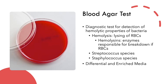Bacteria that produce a class of enzymes called hemolysins are capable of this hemolytic activity. The two most common genera of bacteria looked for in blood agar are the Streptococcus species and Staphylococcus species.